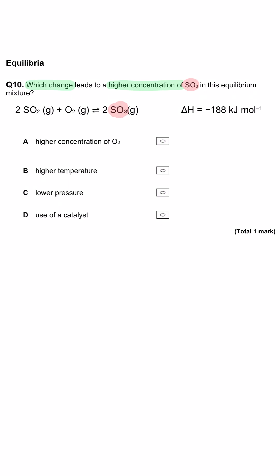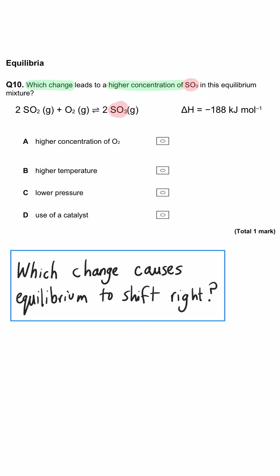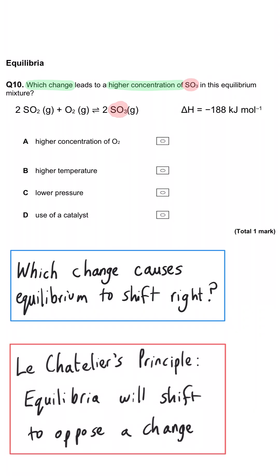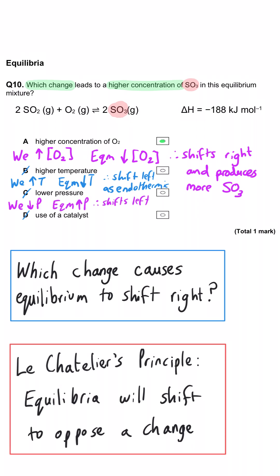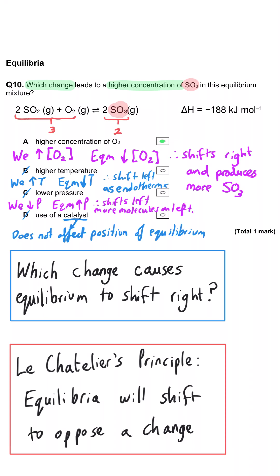Which change leads to a higher concentration of SO₃ in this equilibrium mixture — in other words, which change shifts the equilibrium to the right? A: a higher concentration of oxygen. Since oxygen is on the left-hand side, increasing its concentration shifts equilibrium right to use up the excess oxygen, making additional SO₃. So A is correct. Raising the temperature shifts equilibrium left because left is endothermic. Lowering the pressure shifts equilibrium left because there are more molecules on the left. Using a catalyst has no effect on the position of equilibrium.